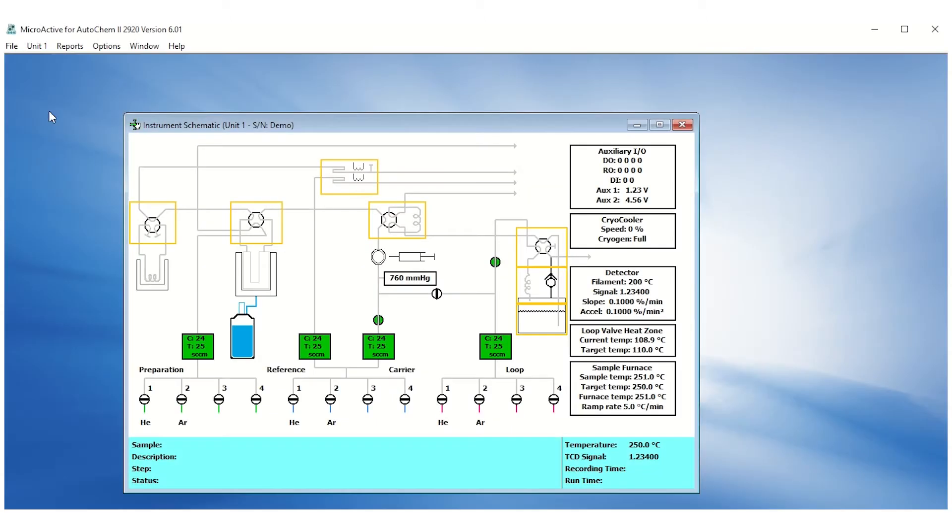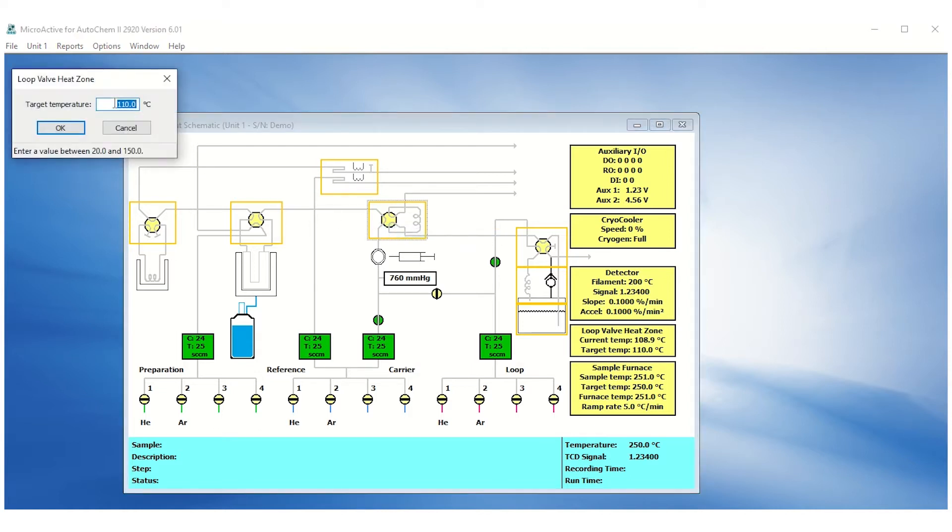To begin, go to unit, enable manual control, right-click the loop valve heat zone, click set temperature, enter 20 Celsius for the target temperature, and then press OK.